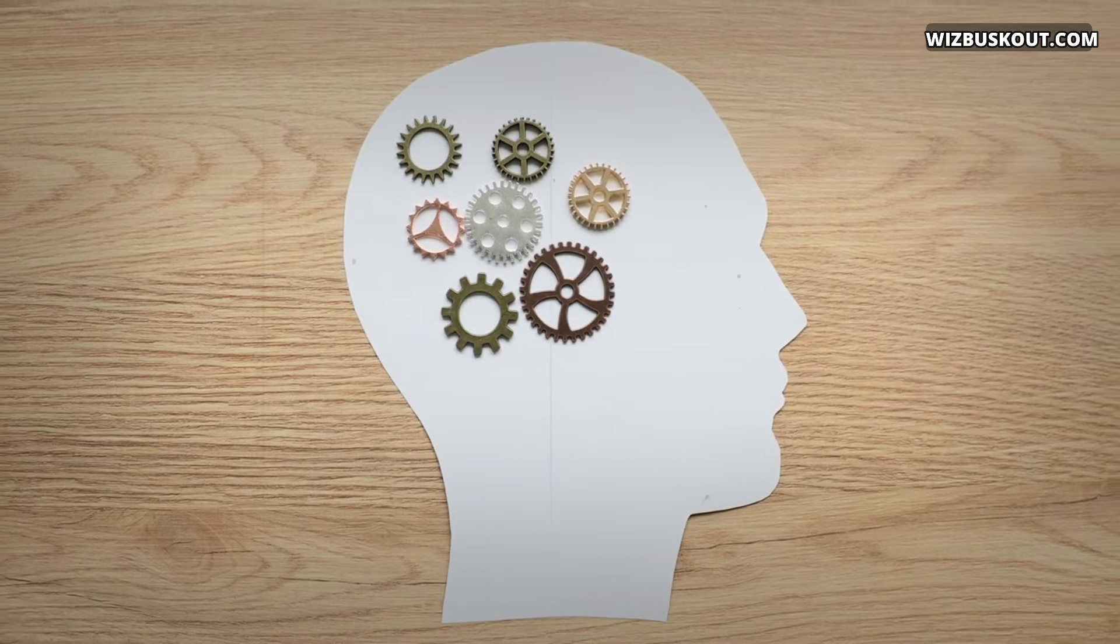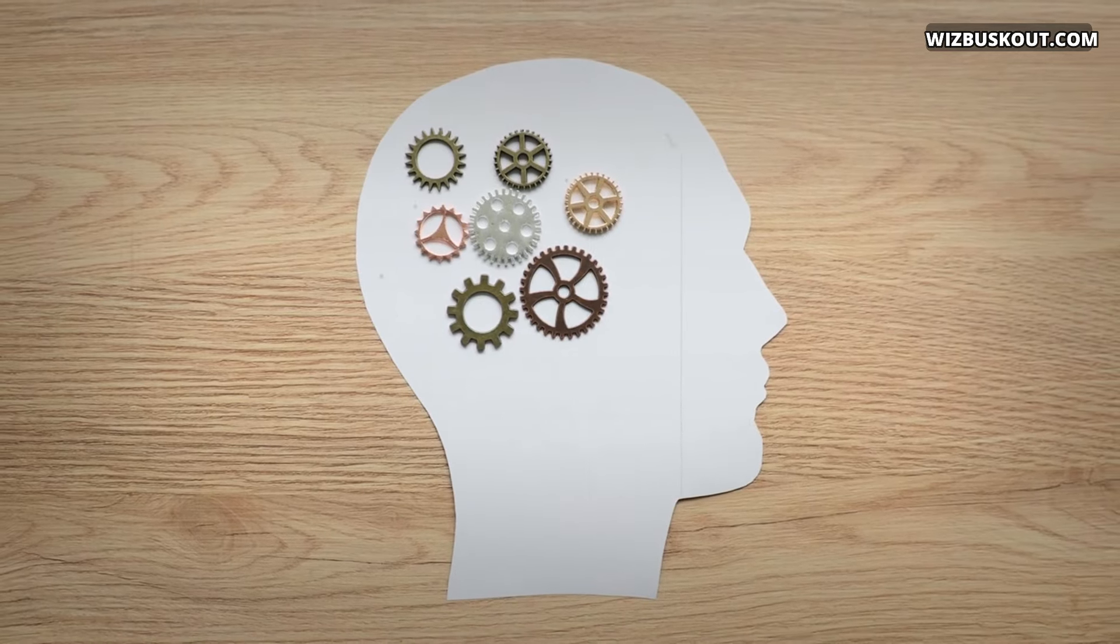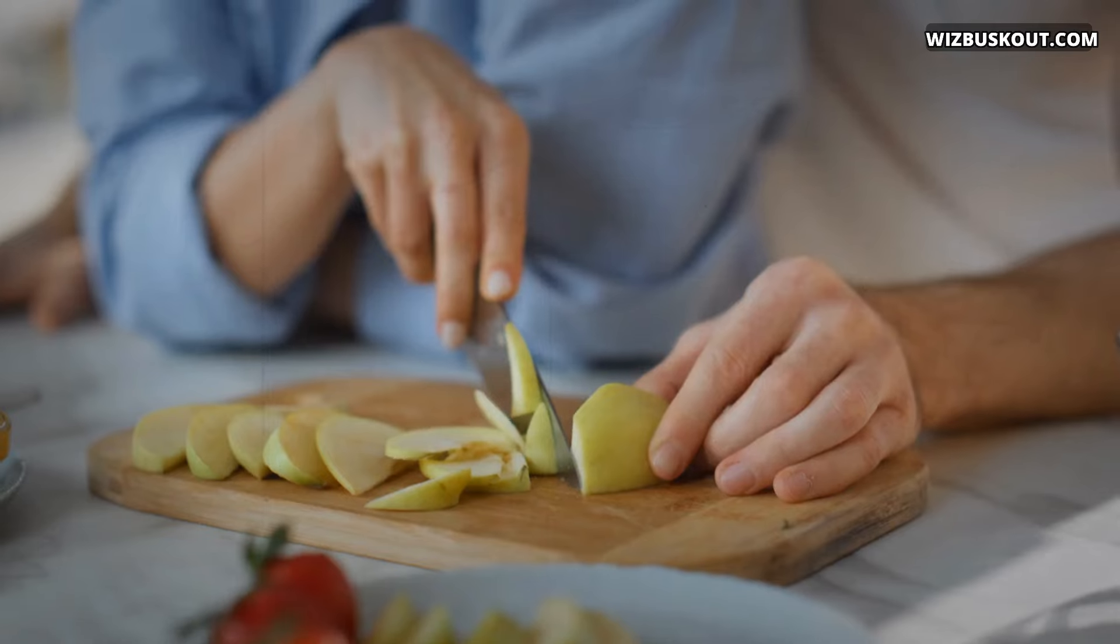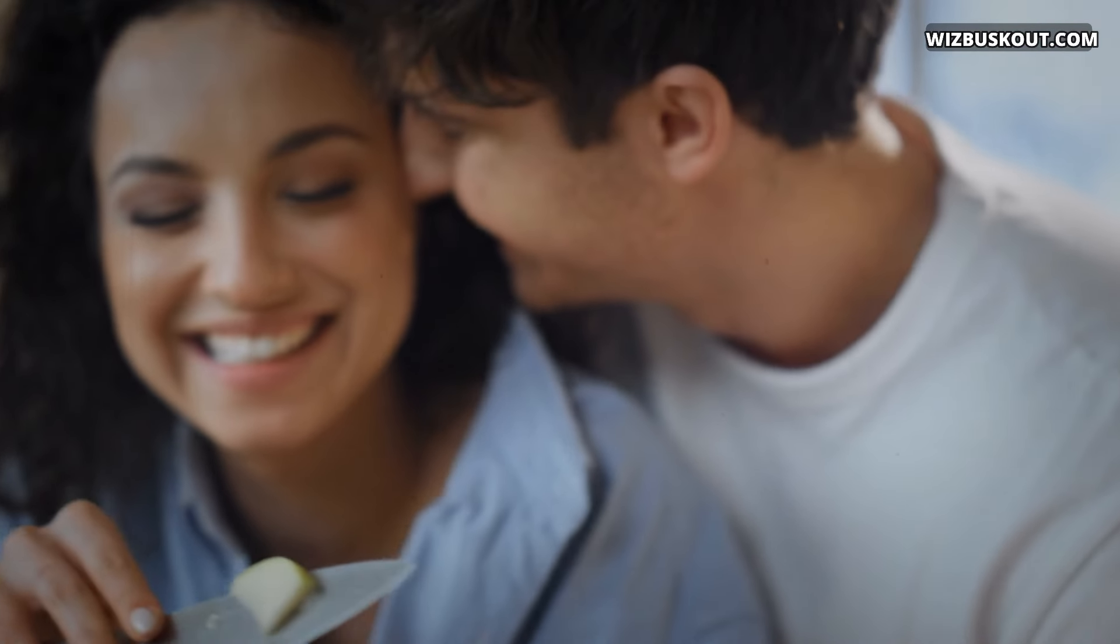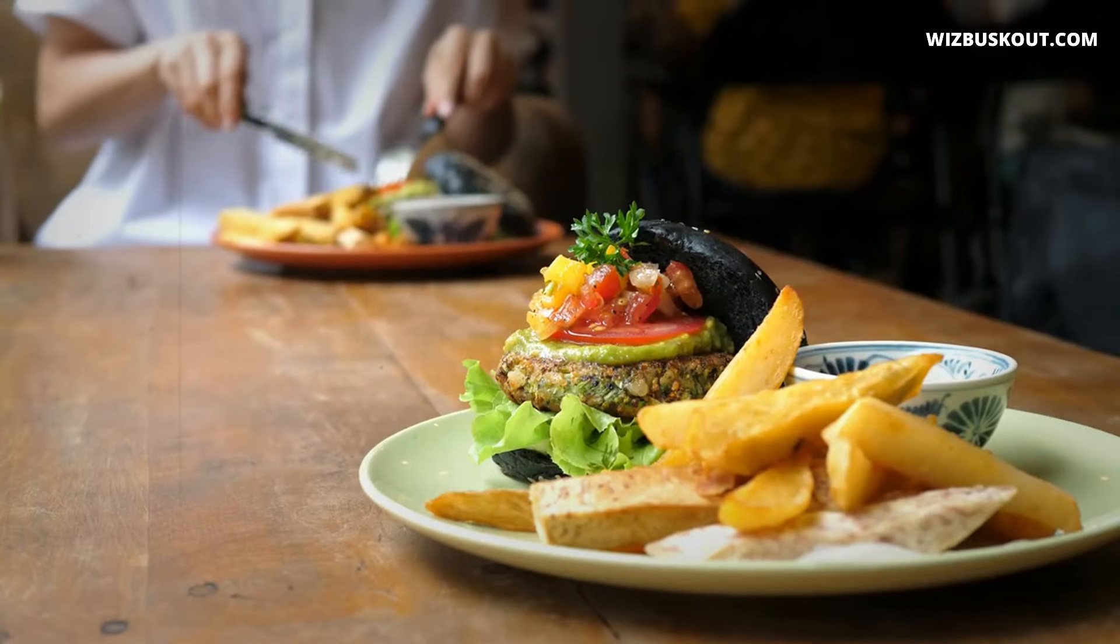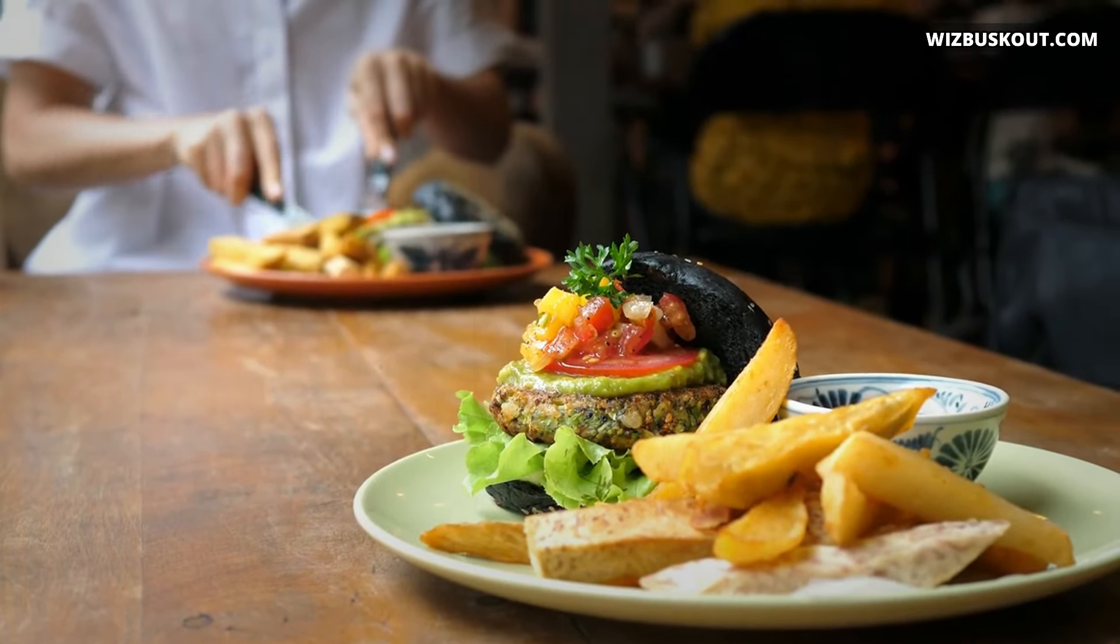Even though we like to think we're in control, much of our behavior happens without any conscious decision making. Dean draws on hundreds of fascinating studies to explain why forming even seemingly simple habits like eating an apple a day can be surprisingly difficult. He shows how to take charge of your brain's natural autopilot to make any change stick.